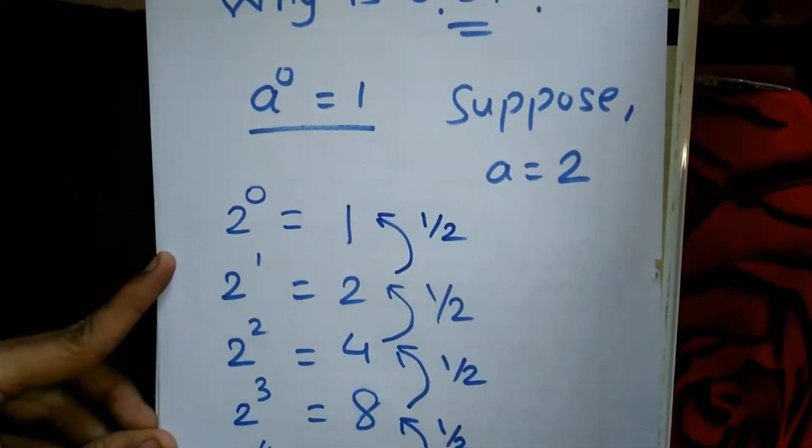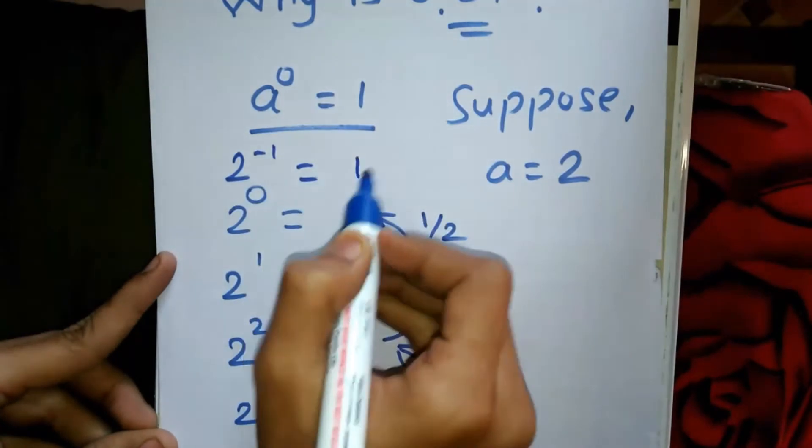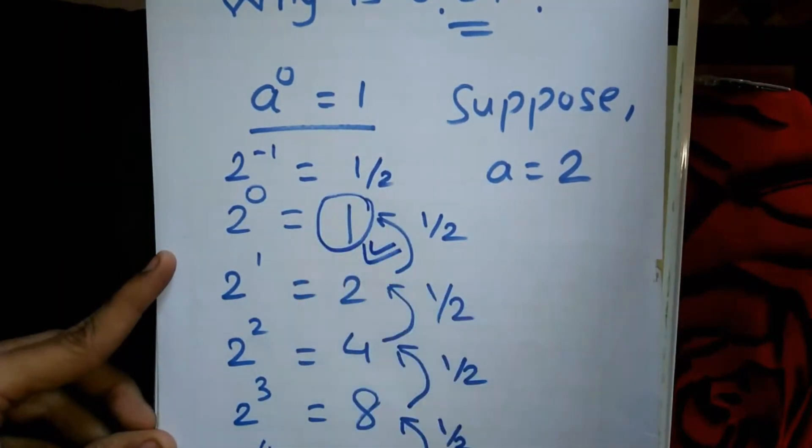When 2 is divided by 2, we get 1, which is 2^0 = 1. So this makes sense.